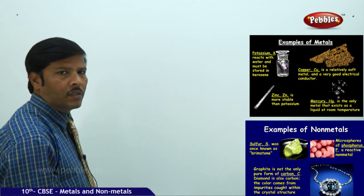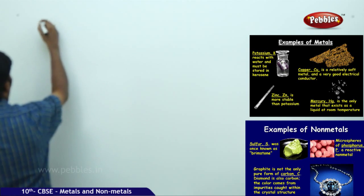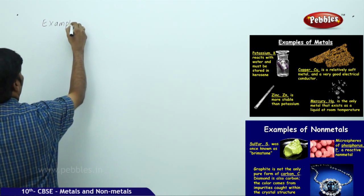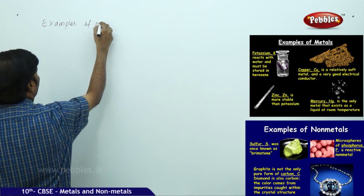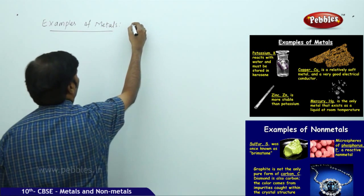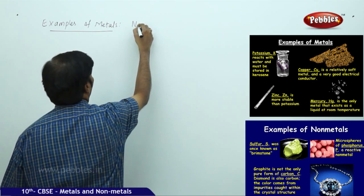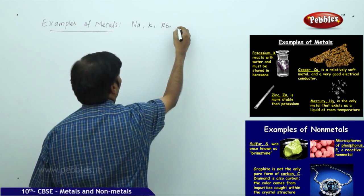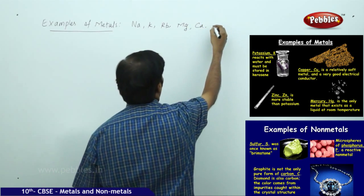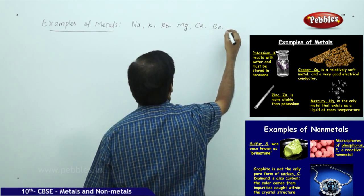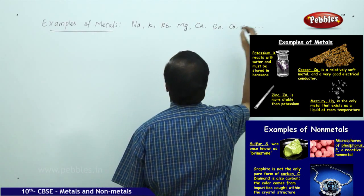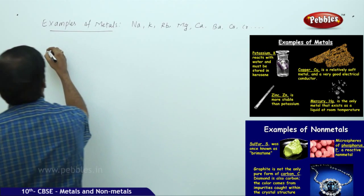For example, take some examples of metals - you take sodium, potassium, rubidium, magnesium, calcium, then you can take barium, copper, chromium, and so on.